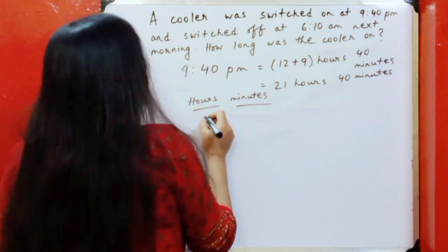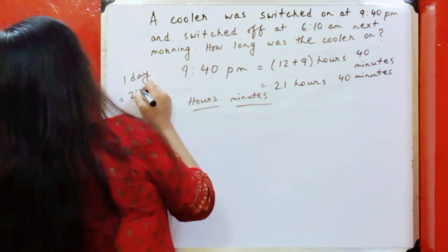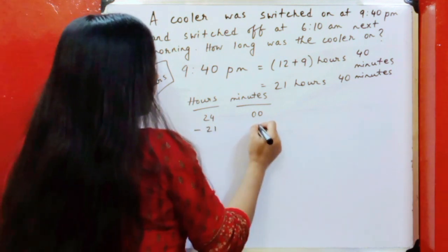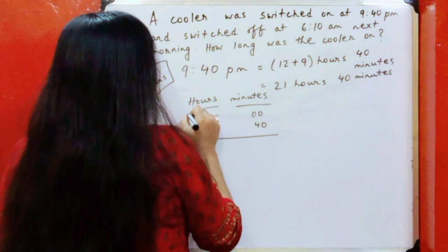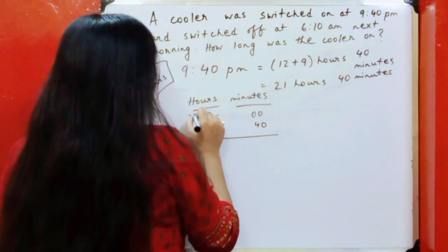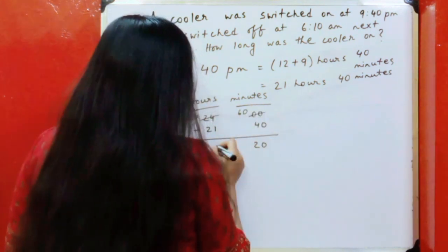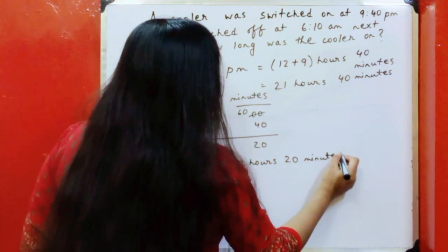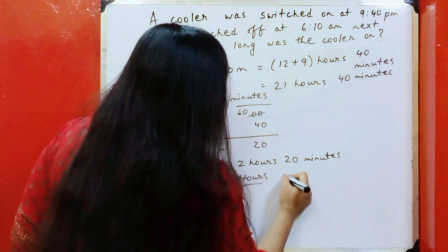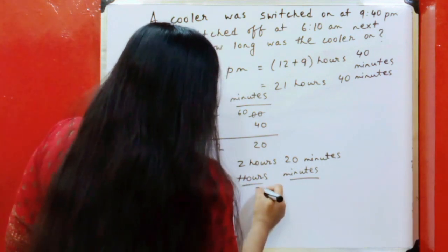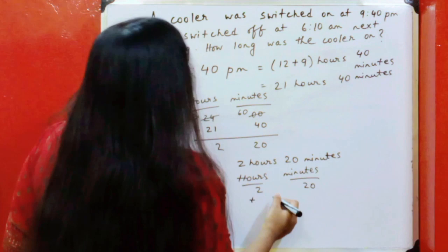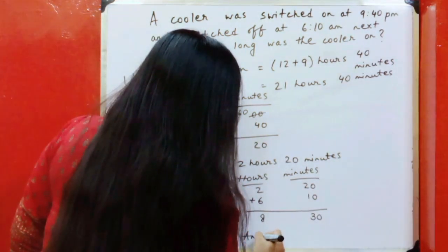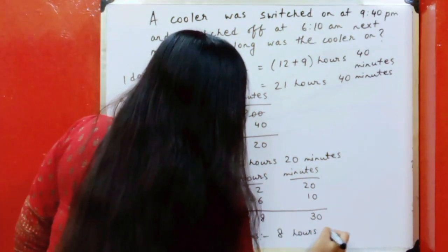We know one day is equal to 24 hours — 24:00. So here I'll subtract. I'll borrow one from here and it will be 23, and this will be 60, so the result is 2 hours 20 minutes. Now we will add 2 hours 20 minutes and 6 hours 10 minutes, so the answer is 8 hours 30 minutes.